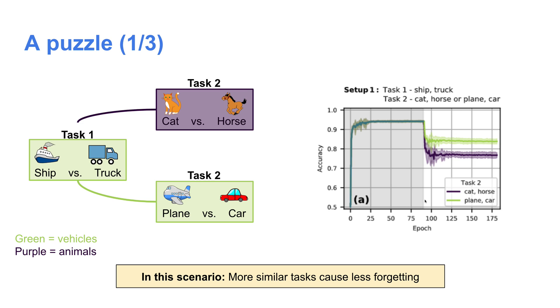Before we get to that, let's start by showing a little puzzle. Let's train a network to first classify between ships and trucks, both vehicles. Then let's take that network and train it on one of two new tasks: either classifying between two animals, cats and horses, or again classifying between two vehicles, planes and cars.